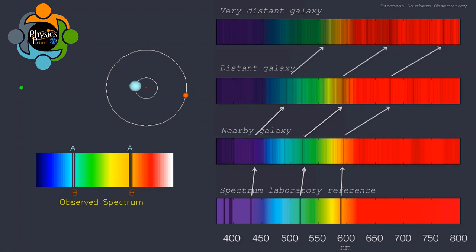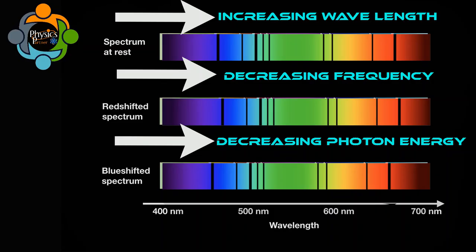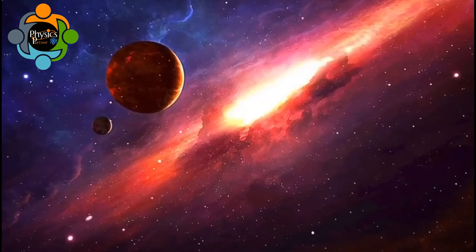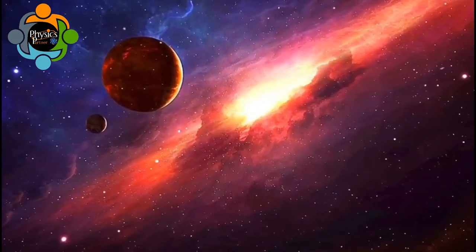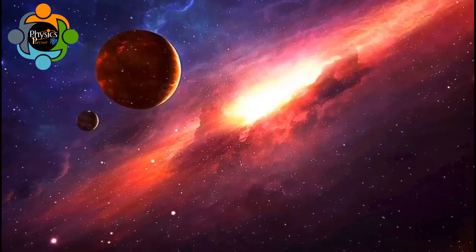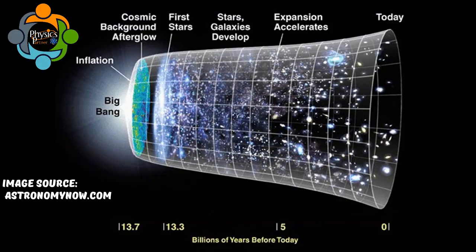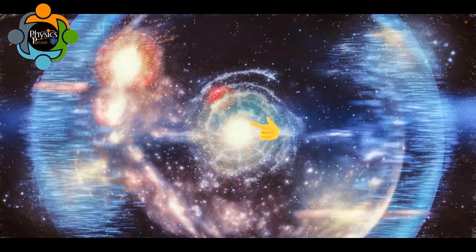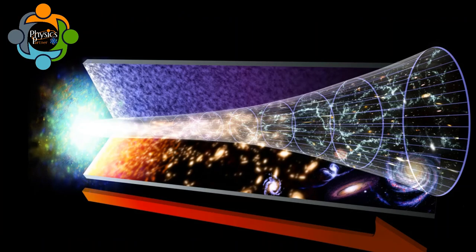In physics, a redshift is an increase in the wavelength and corresponding decrease in the frequency and photon energy of electromagnetic radiation such as visible light. The light emitted from distant galaxies appears redshifted in comparison with light emitted on Earth. In light of Big Bang theory, about 13.8 billion years ago, the whole universe was a very small, extremely hot and dense region.